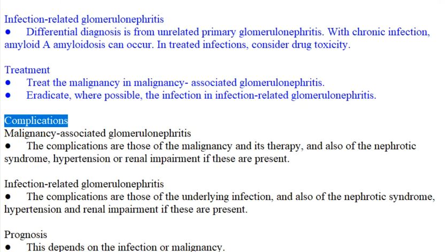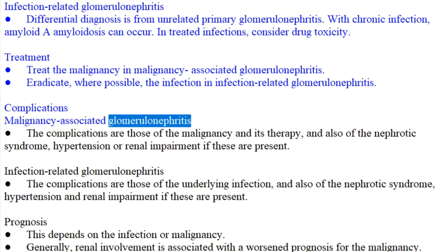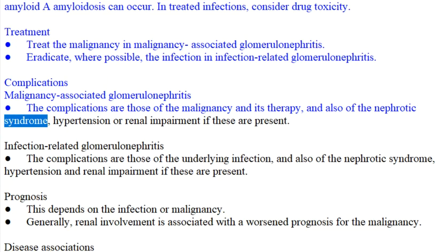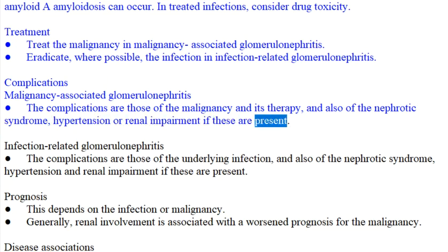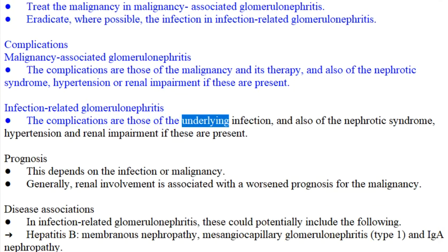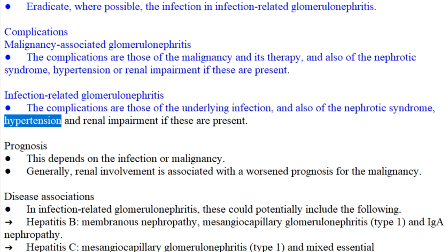Complications. Malignancy-associated glomerulonephritis: the complications are those of the malignancy and its therapy, and also of the nephrotic syndrome, hypertension, or renal impairment if these are present. Infection-related glomerulonephritis: the complications are those of the underlying infection, and also of the nephrotic syndrome, hypertension, and renal impairment if these are present.